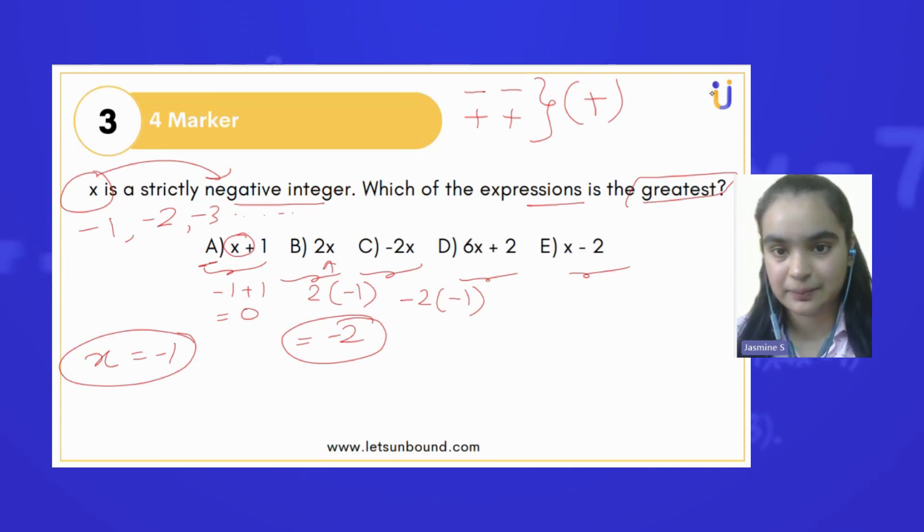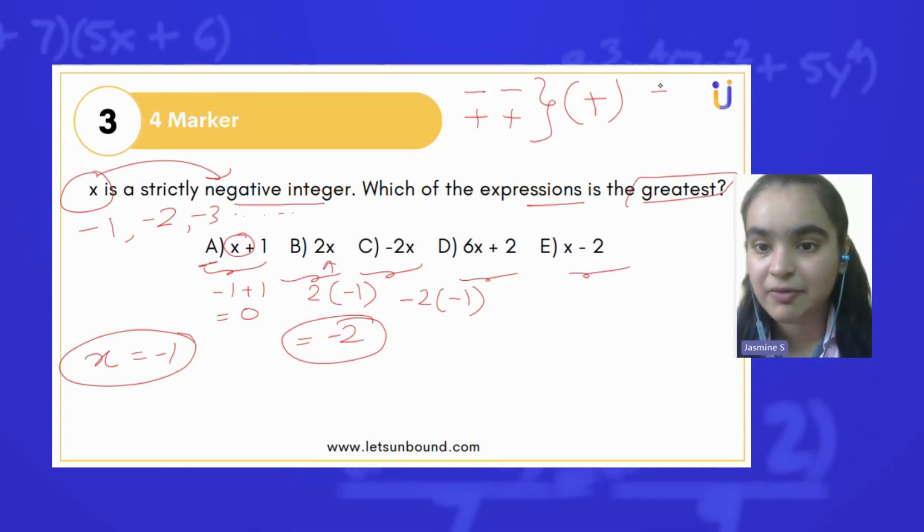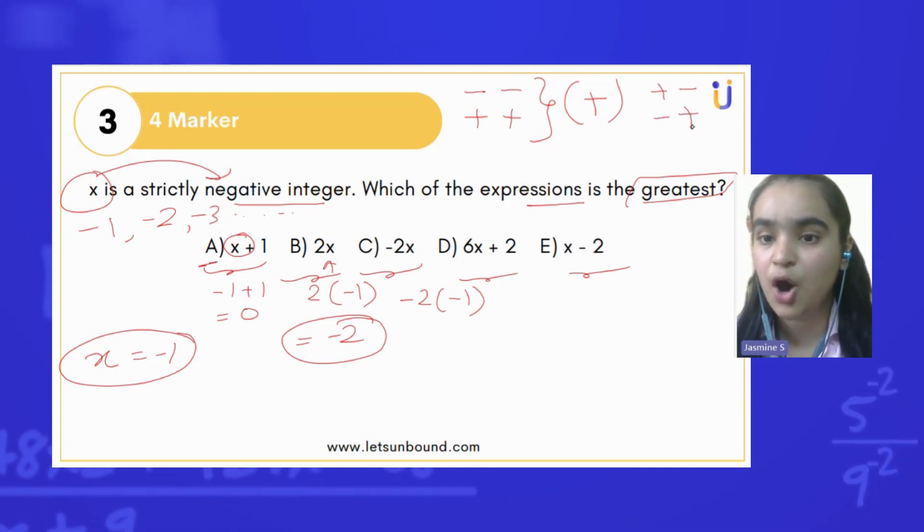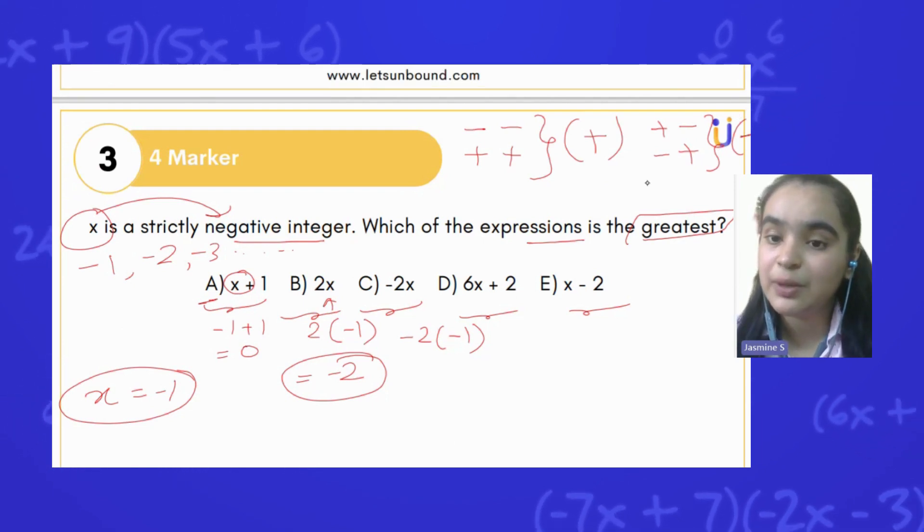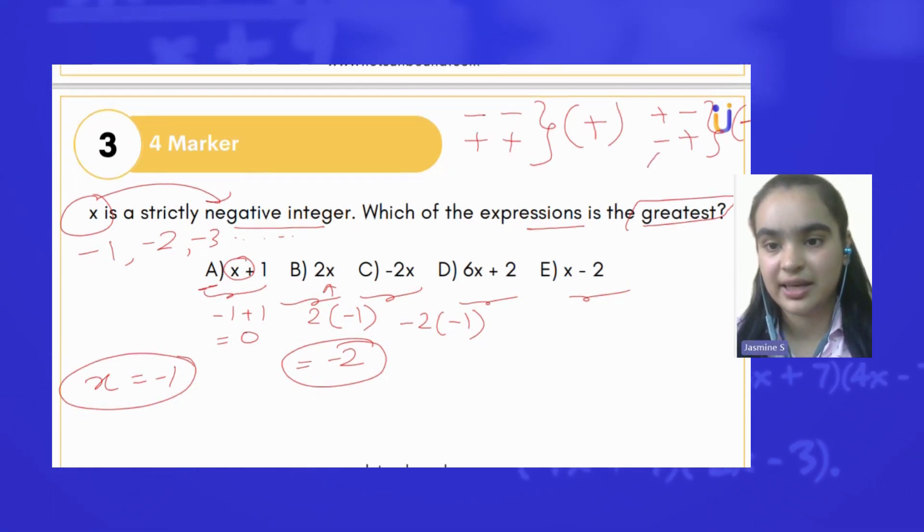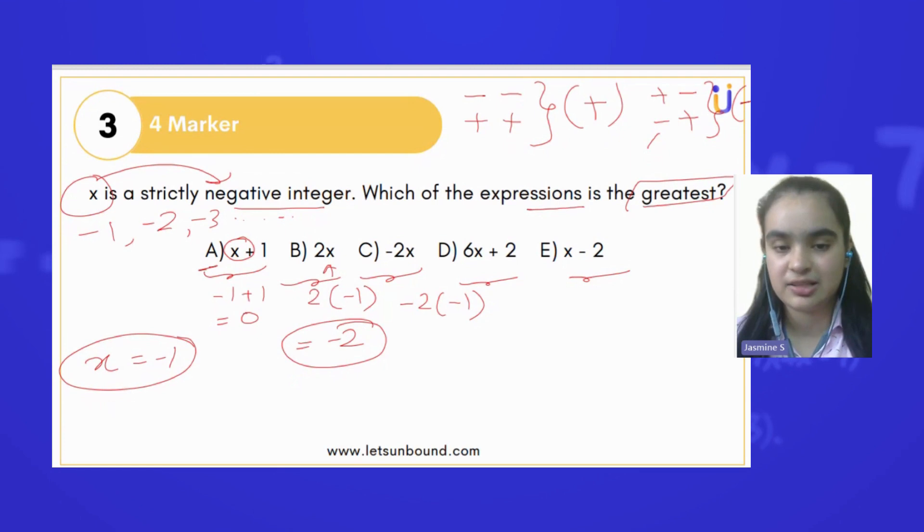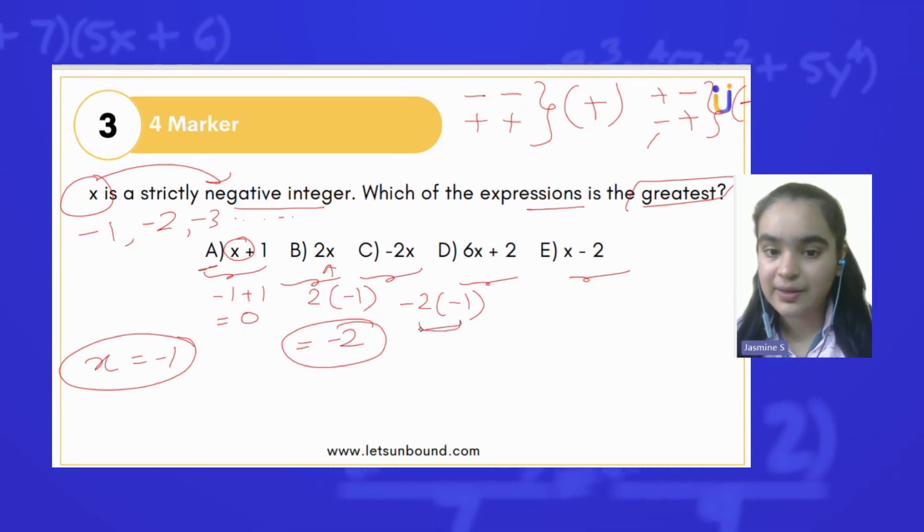Whereas if we are doing multiplication and division with opposite signs, the overall answer we are getting in the end will be in negation—it will be a negative answer.